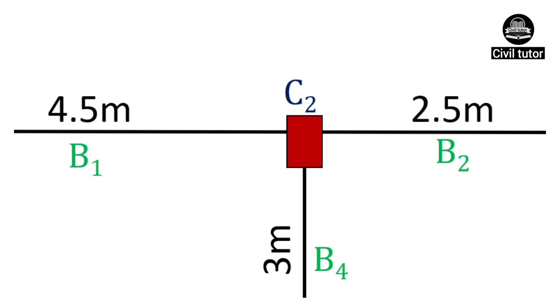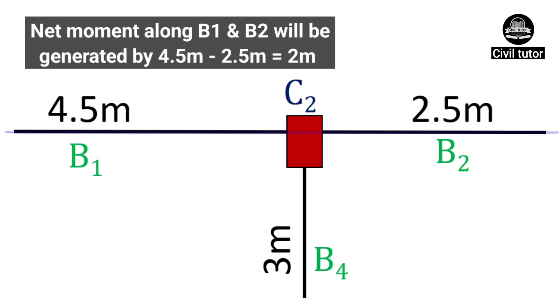Column 2 is connected by the beams B1, B2, and B4, and since B1 and B2 lie on the same axes, but in opposite directions, the net moment on this axis will be generated by 4.5 - 2.5m, i.e. 2m span, which is less than the span of B4, i.e. 3m. Hence, the major axes of bending will be along B4, and the depth of column 2 will be aligned perpendicular to the span of B4.